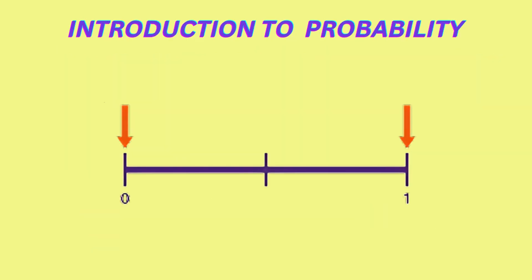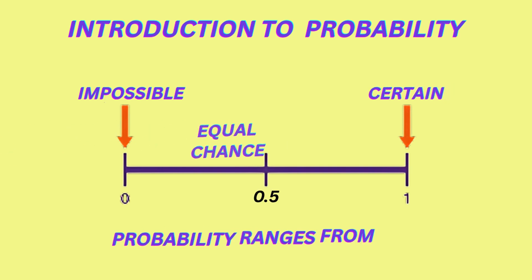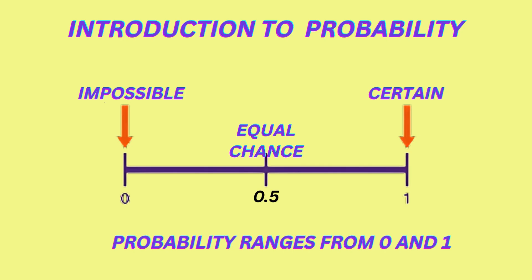A probability of zero indicates that the event is impossible, while a probability of one, or 100%, indicates that the event is certain to happen. All other events have a probability between zero and one.